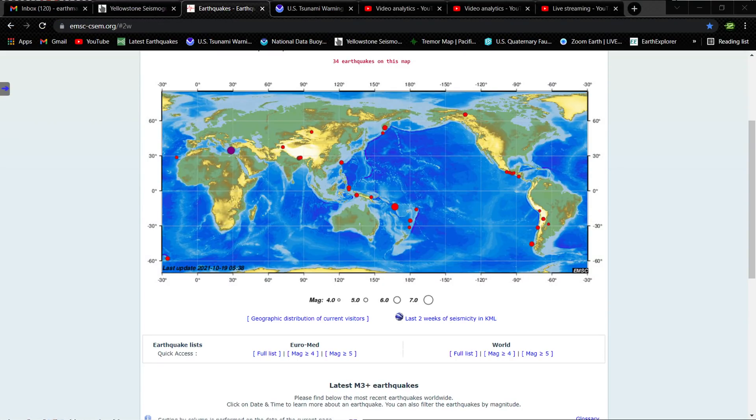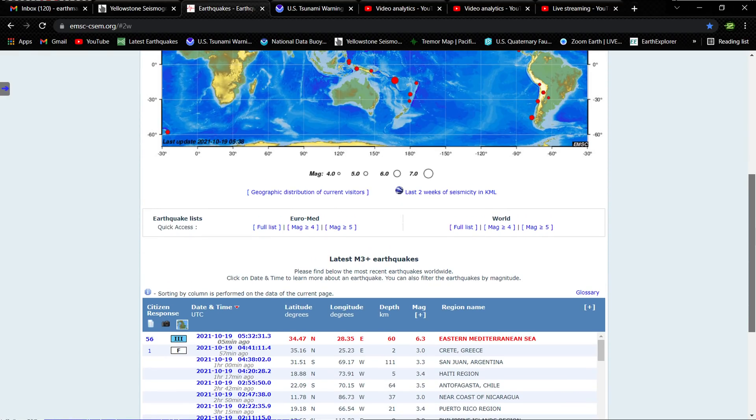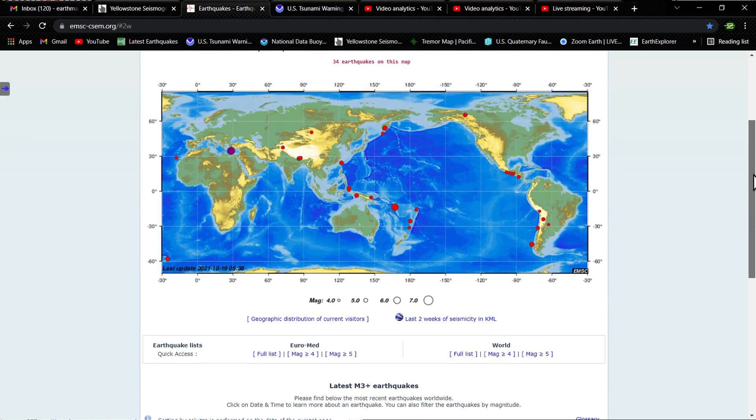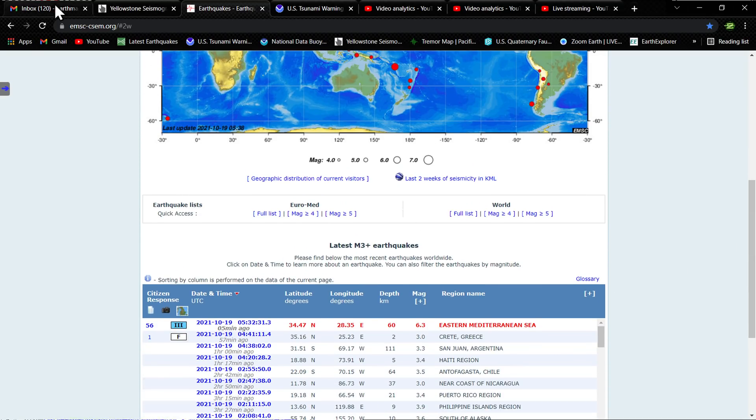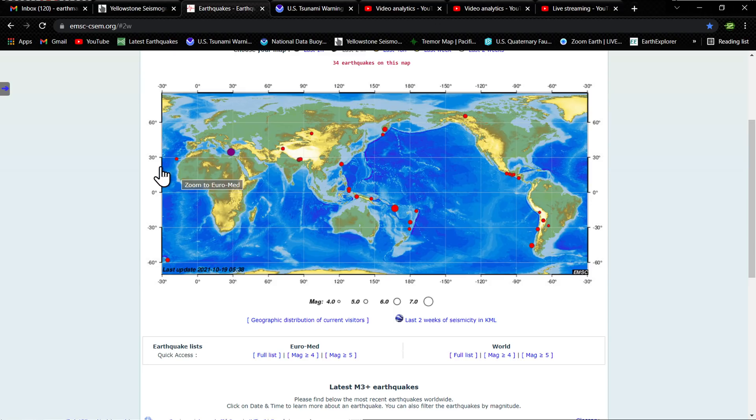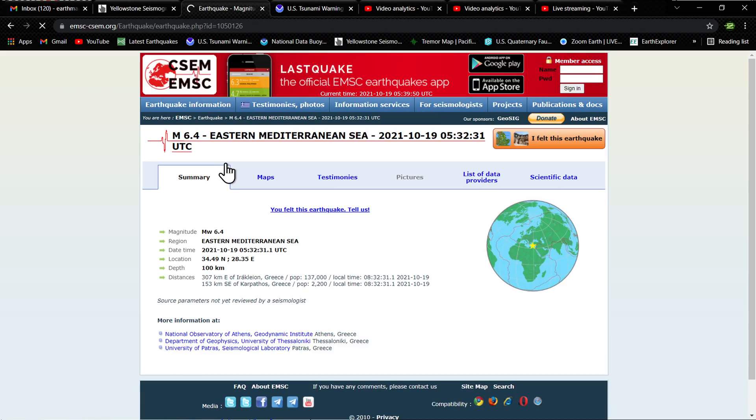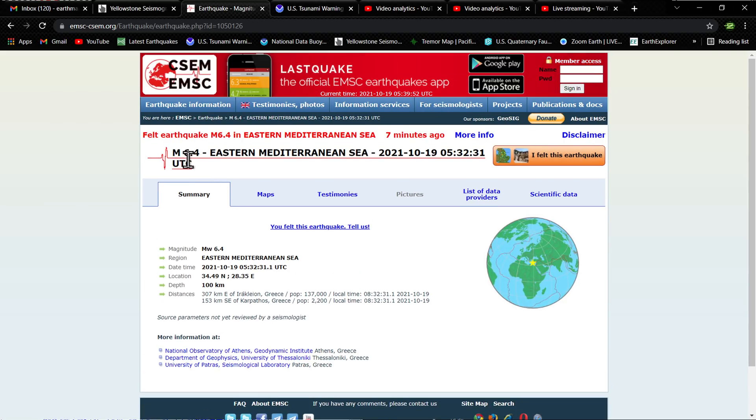The earthquake models here on this map showing that 6.3 earthquake. Looks like it originally came in as a 6.7, but for now on this specific map showing a 6.3. This is the European model, different than the USGS obviously, but these guys are reporting a 6.3 in this area. Well, now it's upgraded to a 6.4 in the Eastern Mediterranean Sea about seven minutes ago.